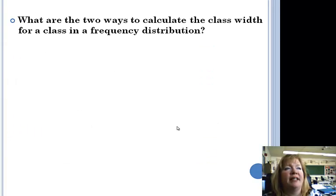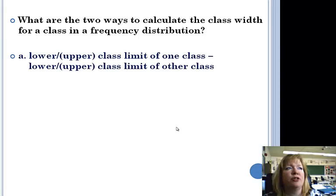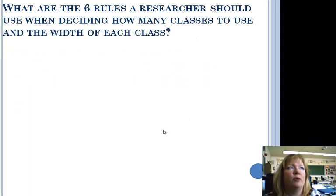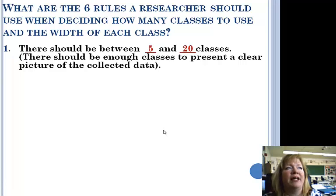What are the two ways to calculate class width for a frequency distribution? You can take the upper or lower class limit minus the lower or upper class limit of the other class. So in one class you subtract the lower, upper, and the other. And we'll do examples of these in class. Class upper boundary minus class lower boundary is the other way that you can find it. So the upper boundary minus the lower boundary gives you the width. What are the six rules a researcher should use when deciding how many classes to use and the width of each class? There should be five to twenty classes, and there should be enough classes to present a clear picture of the collected data.